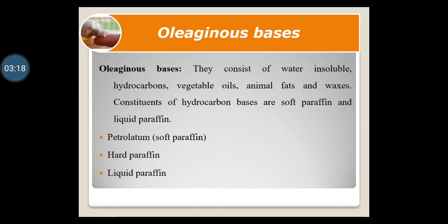Petrolatum or soft paraffin is a purified mixture of semi-solid hydrocarbons obtained from petroleum. There are two varieties: yellow soft paraffin and white soft paraffin. Yellow soft paraffin is bleached to get white soft paraffin. The melting point of both is 38°C to 56°C. White paraffin is used for white or colorless medicaments, but is not generally used for ophthalmic ointments because traces of bleaching agent may remain and cause irritation to the eyes.